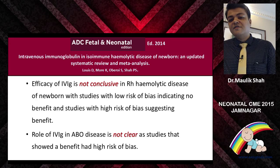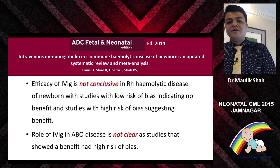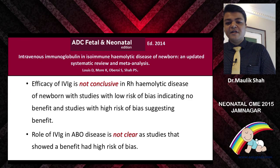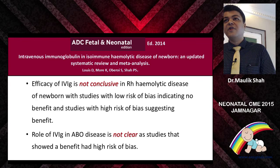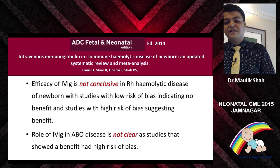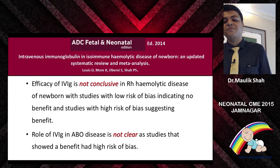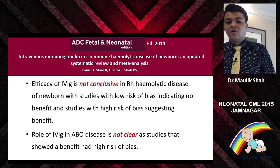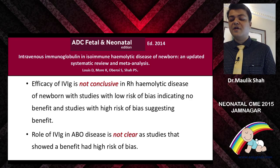One of the biggest pieces of evidence on IVIG is from Archives of Disease in Childhood — a 2014 meta-analysis by Kiran Moreh — which says that the efficacy of IVIG is not conclusive in RH hemolytic disease. Studies with low risk of bias indicate no benefit, while studies suggesting benefit have high risk of bias. There is no role of IVIG in ABO disease, so always think carefully before using it in RH isoimmunization babies.